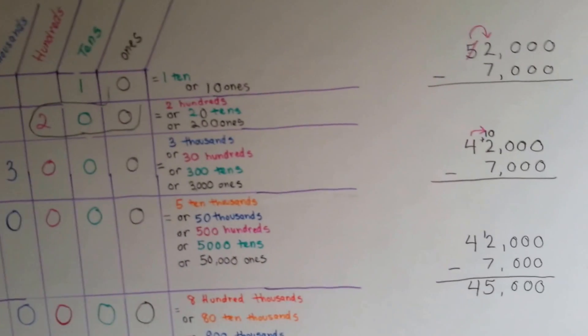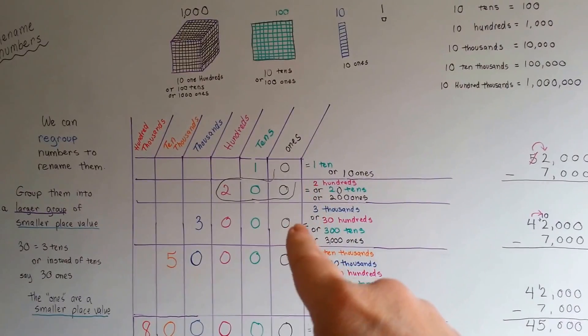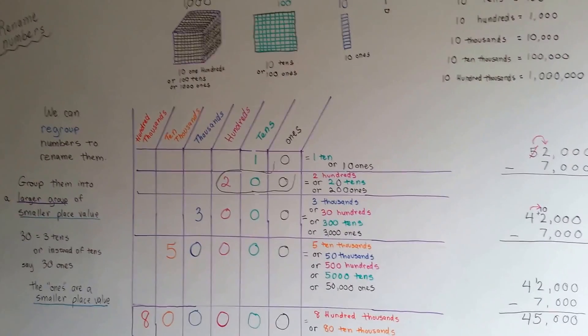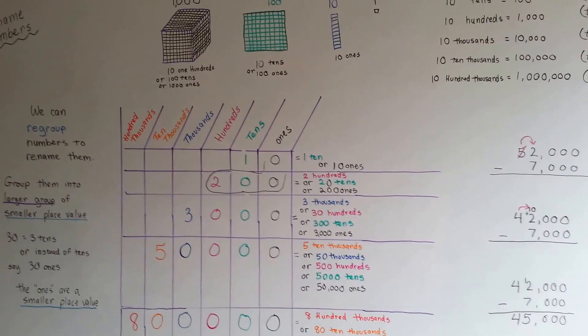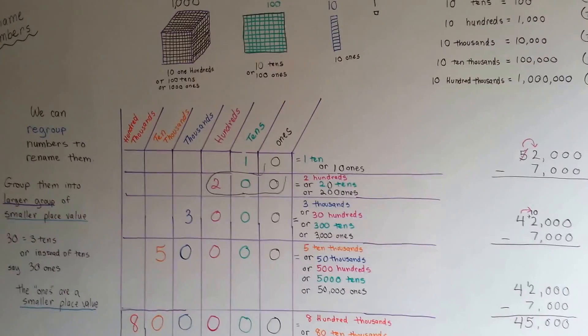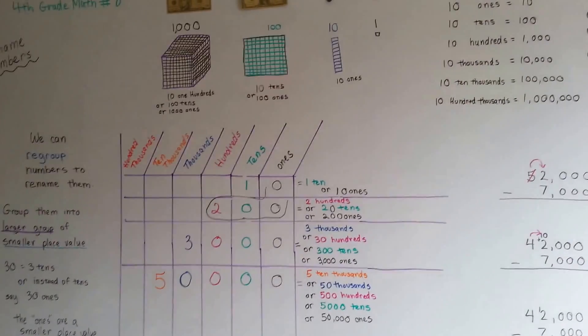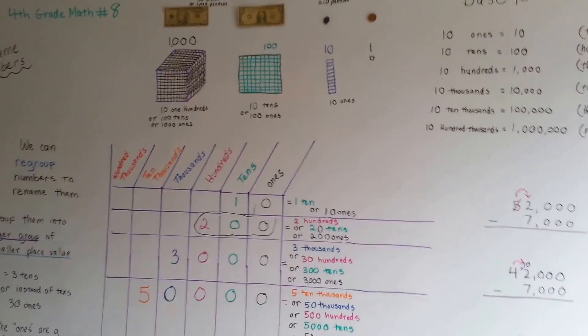It's really important to understand how numbers can be regrouped. One problem with the English language is the way we name our place values — tens, hundreds, thousands. In Japan, and even in Spanish, you don't say twenty; you say two tens. In Japanese they say two tens, and their children, from the beginning of speaking, understand that twenty means two tens and thirty means three tens. In English, we just say thirty and it doesn't carry the meaning that it's three tens and zero ones. So, understanding place value will make you better in math.